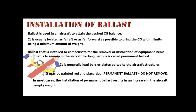Installation of Ballast: Ballast is used in an aircraft to attain the desired CG balance. It is usually located as far aft or as far forward as possible to bring the CG within limits using a minimum amount of weight. Ballast installed to compensate for the removal or installation of equipment items and intended to remain in the aircraft for long periods is called permanent ballast. It is generally lead bars or plates bolted to the aircraft structure, and may be painted red and placarded 'Permanent Ballast — Do Not Remove.'